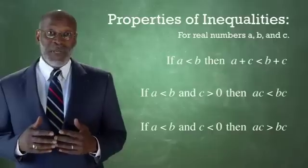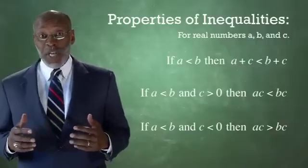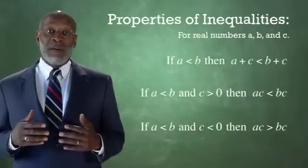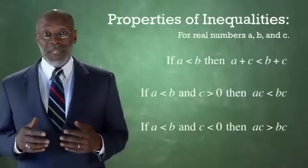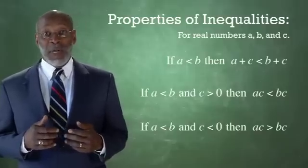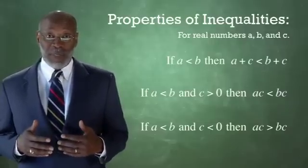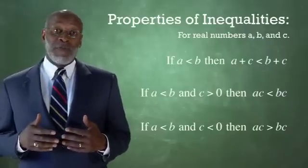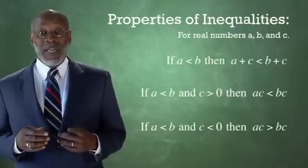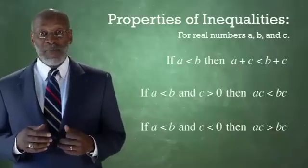Property three is very important. Another way of saying it is that if I have two real numbers A and B, and A is less than B, and if I have a third real number, C, that is negative, if I multiply A times C, and I multiply B times C, then I have to switch the inequality. So if A is less than B, and C is less than zero, or C is negative, then A times C is greater than B times C.